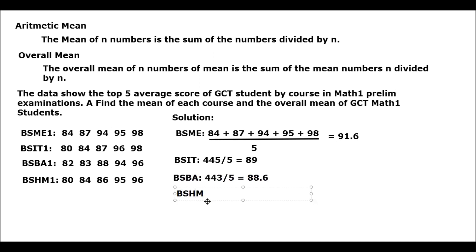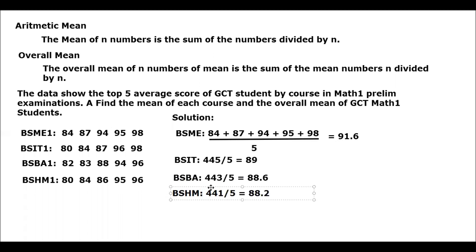For BSHM, the arithmetic mean of the top 5 average is 80 plus 84 plus 86 plus 95 plus 96, and we have 441 divided by 5, which equals 88.2. That is the arithmetic mean of the top 5 average score of BSHM students.